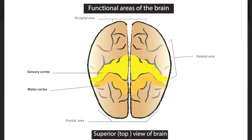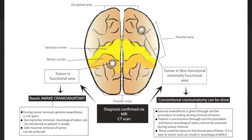These are the functional areas seen from the top. This picture explains where awake craniotomy is useful. On the left side, the tumor is not on a functional area of the brain, so removal of this tumor does not cause serious neurological deficits and can be removed with conventional craniotomy. On the other hand, the tumor on the right is on the motor cortex, and removal of this tumor can cause weakness of limbs if we perform a conventional craniotomy, during which the patient is completely unconscious and does not allow neurological assessment.